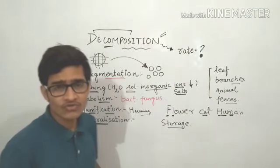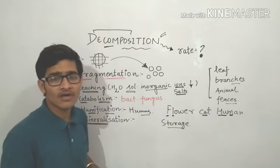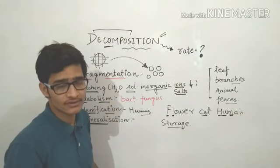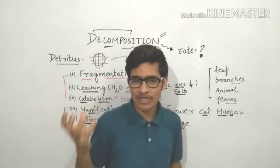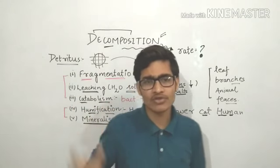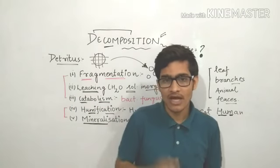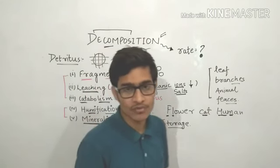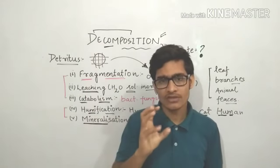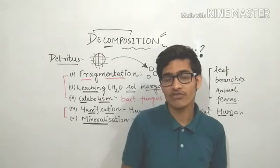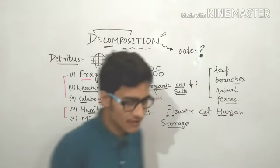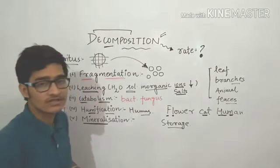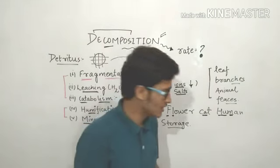That is why the earthworm is called the friend of the farmer. The earthworm decomposes the complex organic substances. That decomposed matter is quite important for the growth of crops. So the earthworm provides the matter needed for crop growth, and also loosens the soil. So it has dual functions — decomposing organic matter and aerating the soil — that's why it is known as the friend of the farmer.